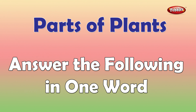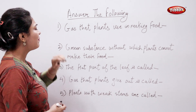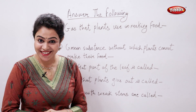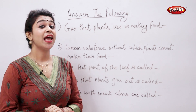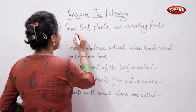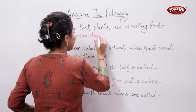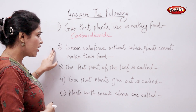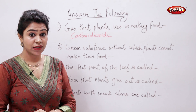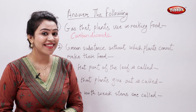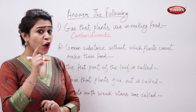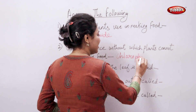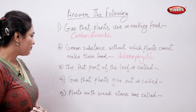The gas that plants use in making food is — come on, tell me — yes, that's carbon dioxide. The green substance without which plants cannot make their food — which is that substance? Tell me. Yes, that's chlorophyll.